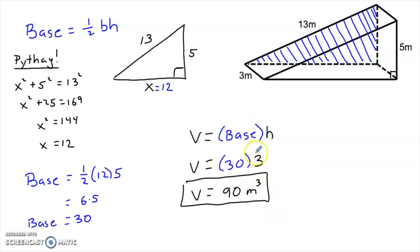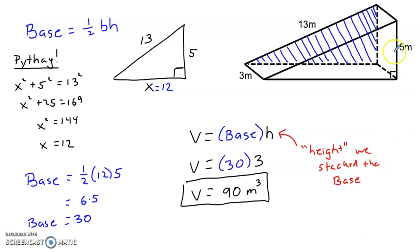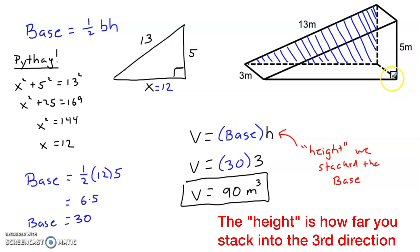Let me clarify this h — the height we stack the Big B Base doesn't necessarily mean a vertical number. In this picture, the 5 is vertical, but that's not the stacking height of this solid. The Big B Base is the triangle in the back, which occupies the left-right and up-down directions, and got stacked in this third direction. So the height we use is the 3 meters — that is how far the triangle was stacked on top of itself to create this three-dimensional object.